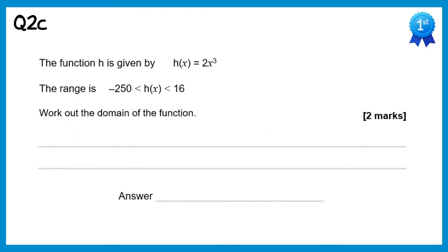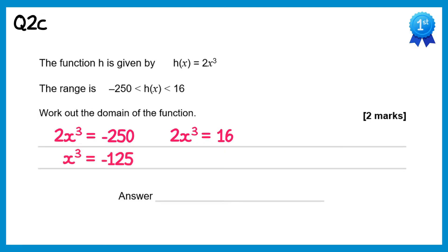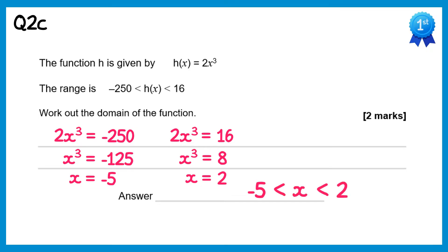For this question we need to work out the domain. I'll write the function 2x cubed equal to the endpoints of the range: 2x cubed equals negative 250 and 2x cubed equals 16. Dividing by 2 gives x cubed equals negative 125, so x equals negative 5. On the right, x cubed equals 8, so x equals 2. The domain is x between negative 5 and 2.